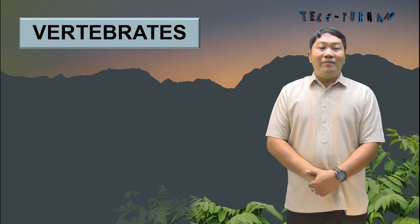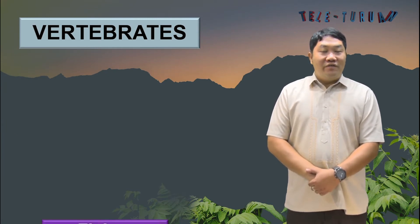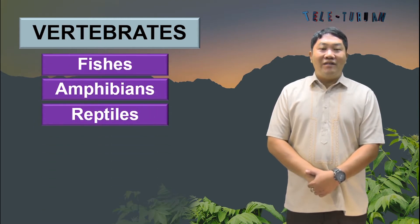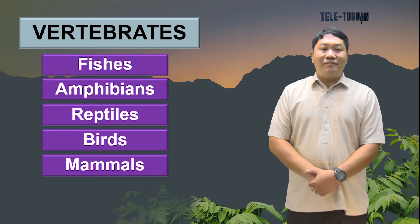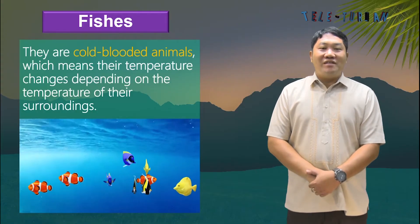Since the vertebrate group is large and diverse, it can be subdivided into five groups: fishes, amphibians, reptiles, birds, and mammals. First, we have fishes.